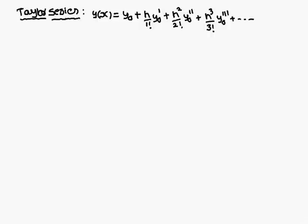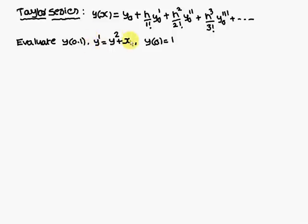We will discuss how to apply this to a problem. The given problem is: evaluate y(0.1), where y' = y² + x, and the given initial condition is y(0) = 1. This means when x = 0, the value of y is 1. We need to find the value of y when x = 0.1.